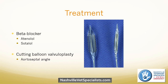For treatment of subaortic stenosis, we start them on a beta blocker — mainly to decrease myocardial oxygen demand to reduce the risk of arrhythmias, especially fatal arrhythmias. Typically we start with atenolol. If they develop ventricular arrhythmias, we usually switch to sotalol — a beta blocker and potassium channel blocker. The potassium channel blocking effects of sotalol are more helpful for ventricular arrhythmias. Subaortic stenosis is probably one of my least favorite defects because we don't have a lot we can do — mainly just a beta blocker and managing consequences like arrhythmias.